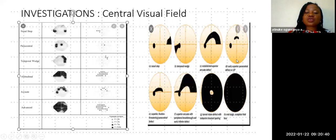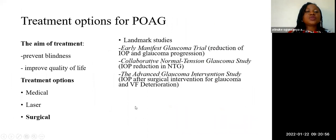The central 10 degrees to fixation is spared in glaucoma — that is the last point to be lost. Eventually there is blindness and total loss of the visual field. The treatment options for primary open-angle glaucoma generally aim to prevent blindness and improve quality of life. Many studies have shown it is essential to intervene when the diagnosis is made, either medically, by laser, or surgically, as intervening reduces the progression of the disease. The treatment options are medical, laser, and surgical. Today we will focus on surgical options.